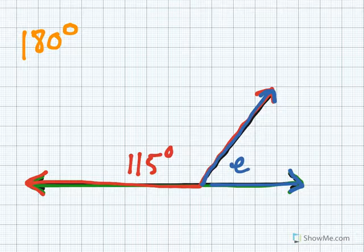The sum of these two angles, 115 degrees plus E, should equal 180 degrees because they are supplementary angles.